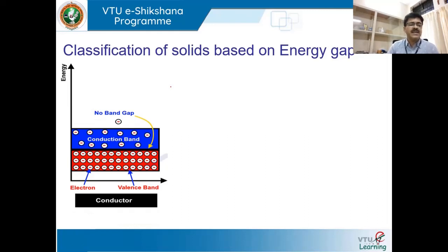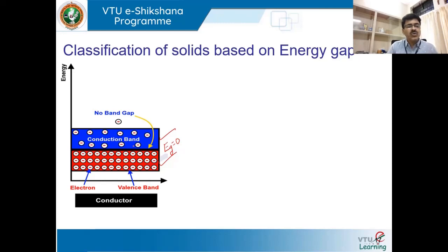The first kind of material is a conductor. In a conductor, the valence band and conduction band overlap, so the energy gap is equal to zero — there is no energy gap at all. Even at absolute zero Kelvin, some electrons at the topmost of the valence band are found at the bottom of the conduction band. That is the reason a conductor conducts electricity even at zero Kelvin — because electrons are present in the conduction band.